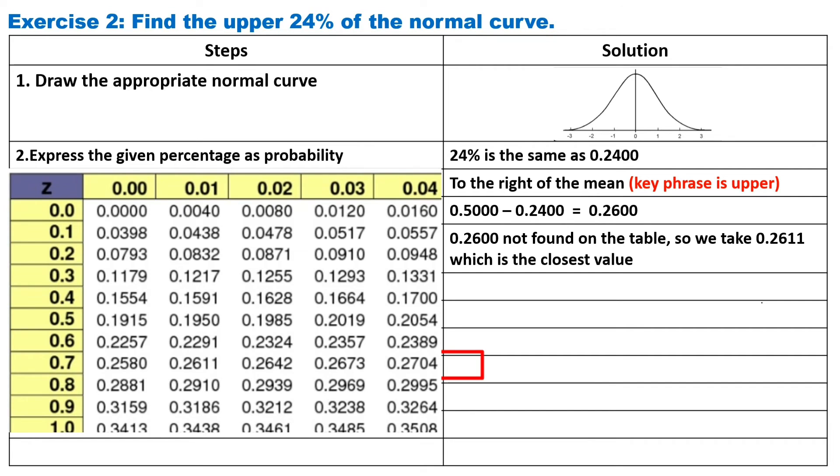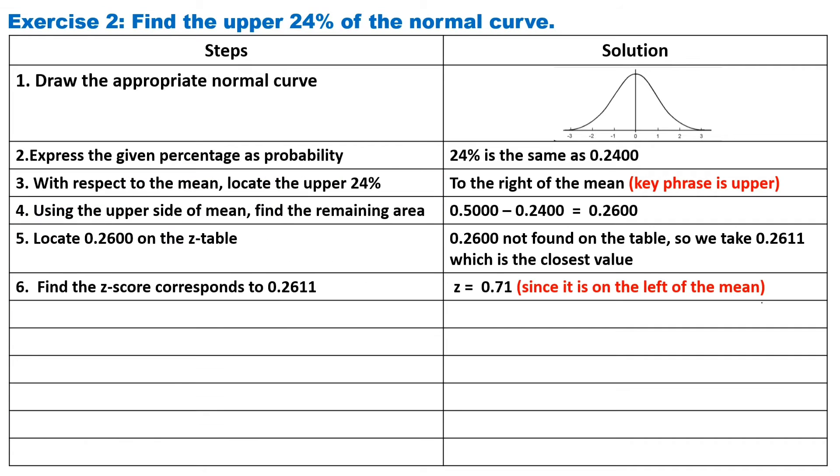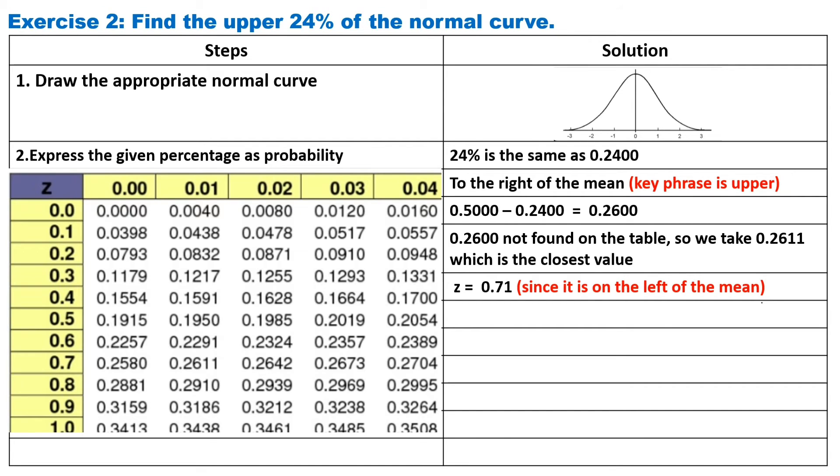Step five, locate 0.2600 on the Z-table. It is not found on the table, so we take 0.2611, which is the closest value. Step six, find the Z-score corresponds to 0.2611. It is 0.71.